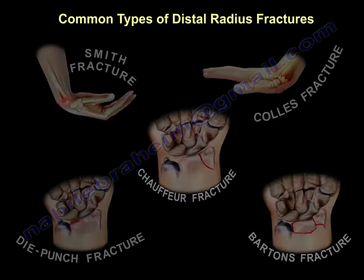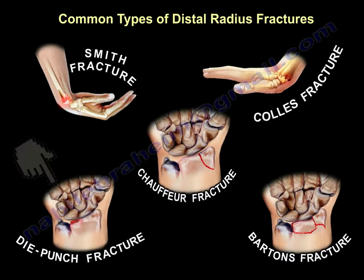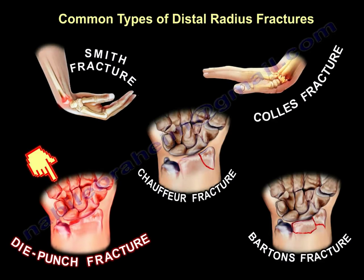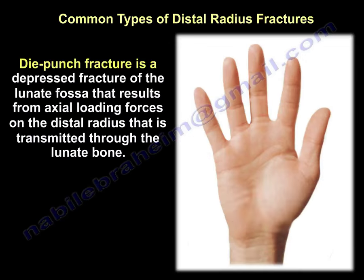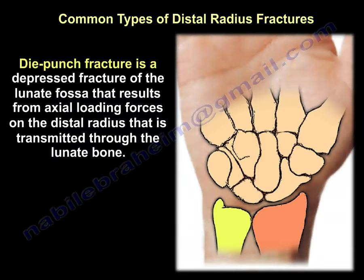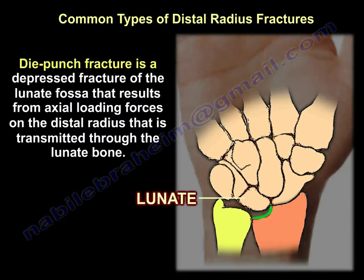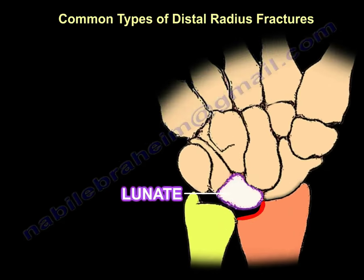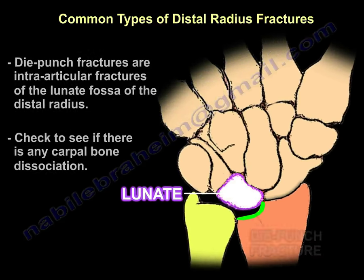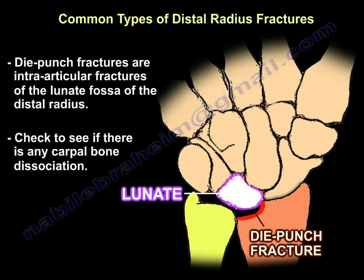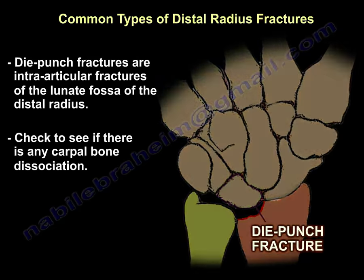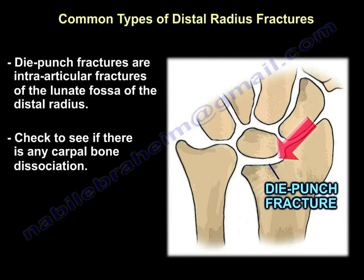The next type is the die punch fracture — a depressed fracture of the lunate fossa caused by an axial load transmitted through the lunate bone. These are intra-articular fractures of the lunate fossa. Always check to see if there is any associated carpal bone dissociation.